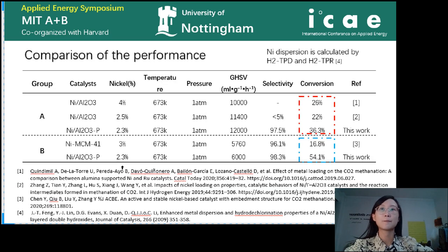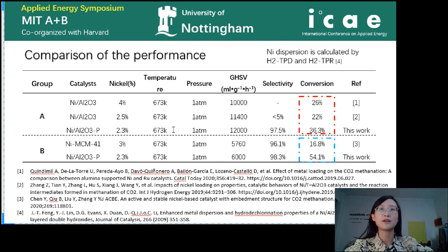Here shows the comparison of the prepared nickel alumina catalyst with literature. All catalysts are prepared with similar nickel loading and performed under the same temperature and pressure. Group A catalysts are compared under a higher GHSV of over 10,000, and the carbon dioxide conversion of the nickel alumina P catalyst is higher than the references. Similar results are found in group B at a lower GHSV. This suggests that the nickel alumina P catalyst is promising for carbon dioxide methanation and needs further characterization to explain the mechanism.